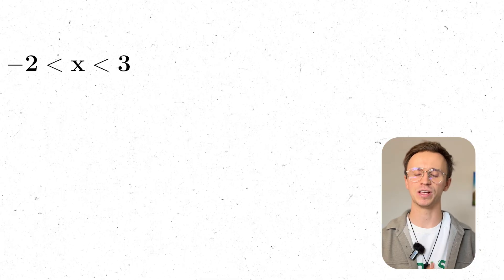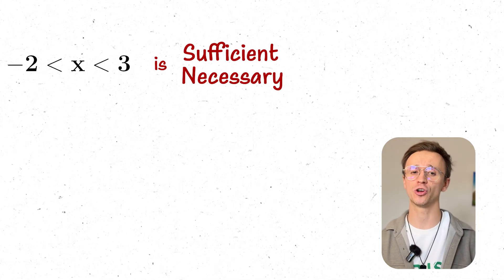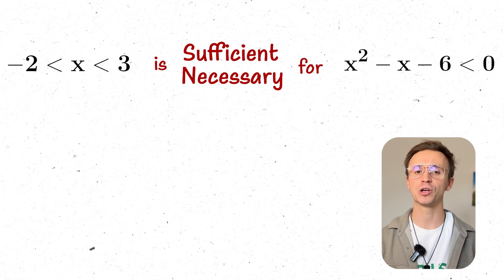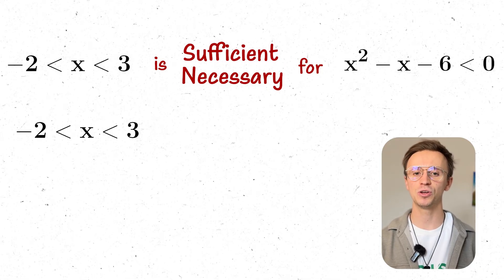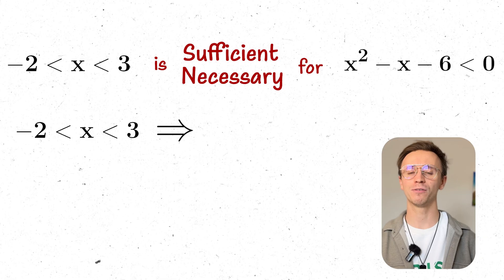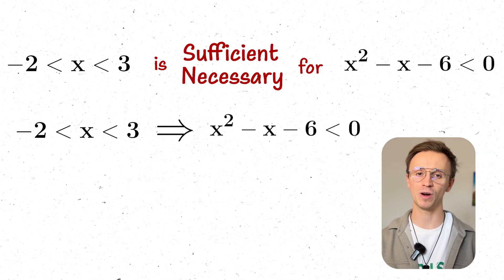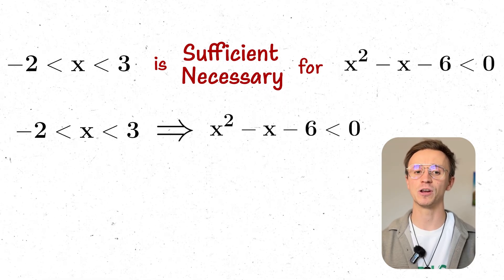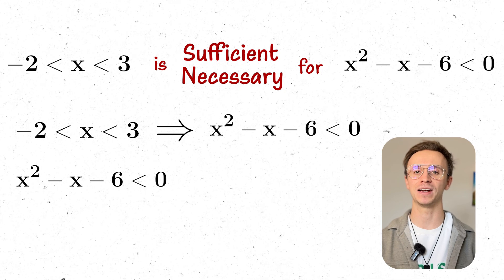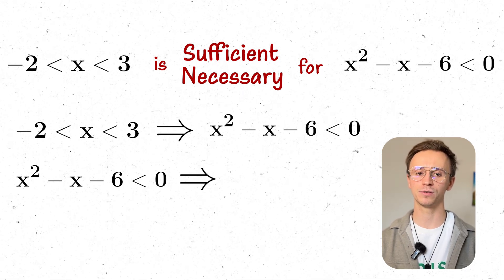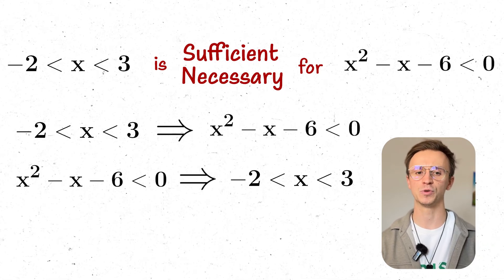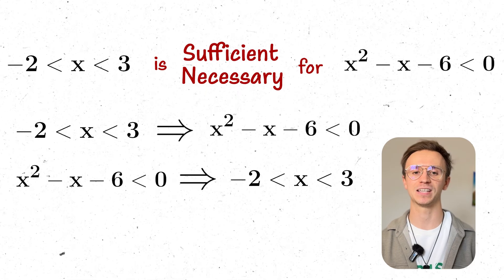Going back to our quadratic: x being between -2 and 3 is both a necessary and sufficient condition for x² - x - 6 < 0. It's sufficient because if -2 < x < 3, our graph shows x² - x - 6 is less than zero. It's necessary because if x² - x - 6 < 0 then from our graph x must be between -2 and 3 — there's no other way to get that inequality.